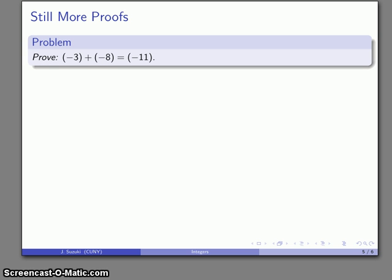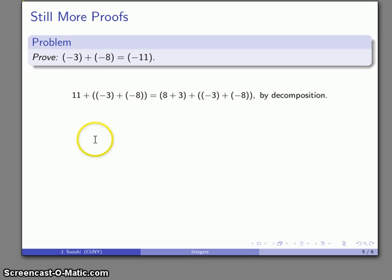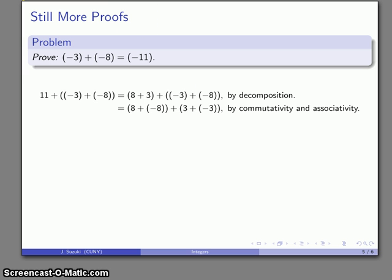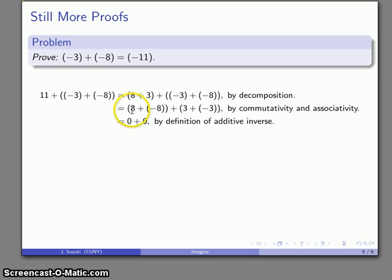Let's look at another proof: the additive inverse of three plus the additive inverse of eight is the same as the additive inverse of eleven. Again, we'll use a duck proof. Start with eleven plus the additive inverse of three plus the additive inverse of eight. Break eleven apart into eight plus three — that's whole number arithmetic. Assuming associativity and commutativity hold, rearrange: group eight with its additive inverse, and three with its additive inverse. By definition of additive inverse, each pair gives zero.